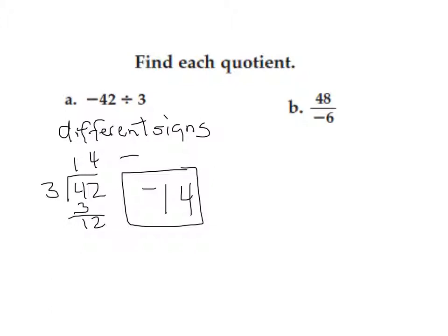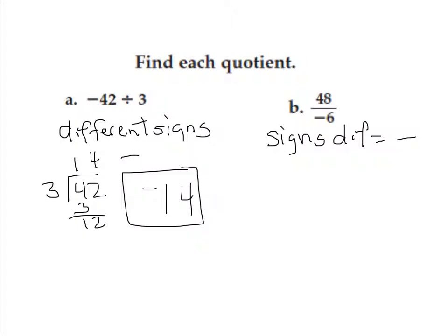Problem B, I have 48 divided by a negative 6. Signs are different, so I now know that the answer is going to be a negative, which sets up for me to do some long division. I find that 48 divided by 6 is 8. So, my answer is a negative 8, with the signs being different.